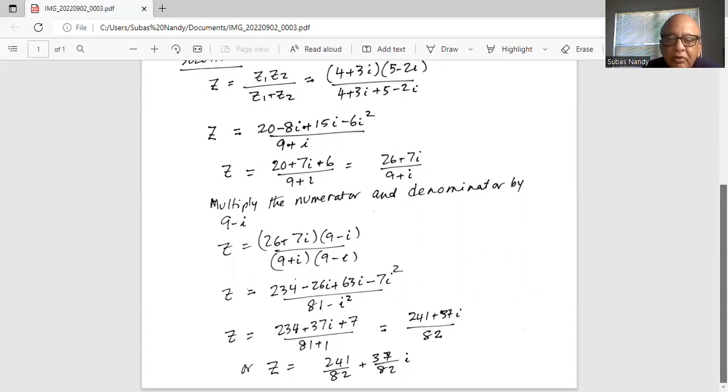So we have 234 minus 26 plus 63 is plus 37i, and minus 7 times minus 1 becomes plus 7, divided by 81 plus 1. So in the numerator, we have 234 plus 7 is 241 plus 37i divided by 82.